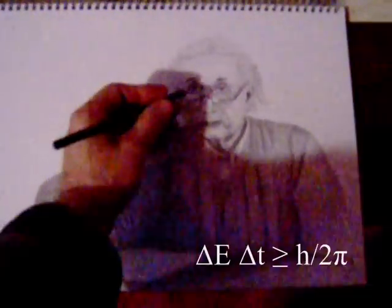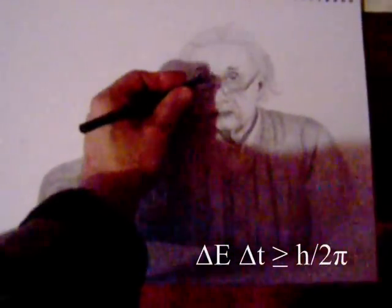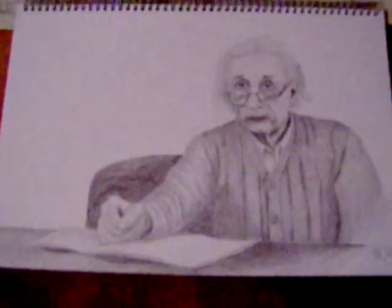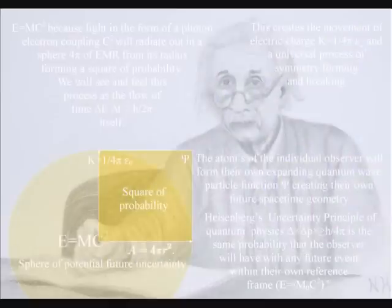An artist will take energy and time to create a work of art because the atoms of the hand and eye have bonded together, forming the movement of electric charge, creating their own potential future. Creation is truly in the hand and eye of the beholder in this theory.